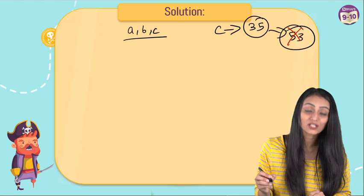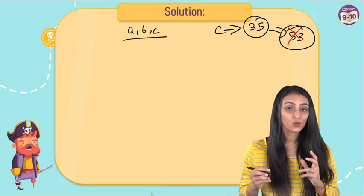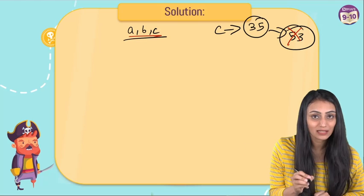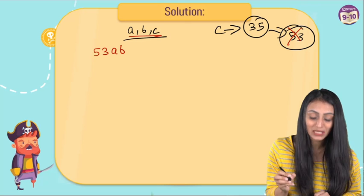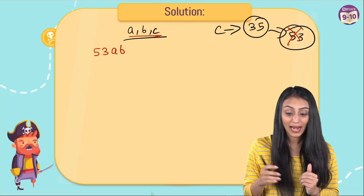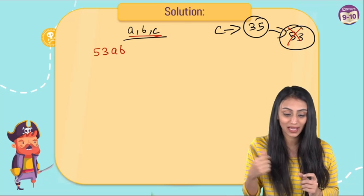Ideally it was supposed to be 35, it wasn't supposed to be 53. So what we can say is the product of these three numbers would be 53ab, because the third number is 53. And if I consider c as 35, then in that case it would be 35ab.